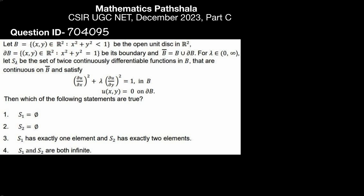Let B equal to {(x,y) ∈ ℝ² such that x² + y² < 1} be the open unit disk in ℝ², and ∂B equal to {(x,y) ∈ ℝ² such that x² + y² = 1} be its boundary, and B̄ = B ∪ ∂B. For λ belonging to the open interval (0, ∞), let S(λ) be the set of twice continuously differentiable functions in B that are continuous on B̄ and satisfy the given PDE in B, with u(x,y) = 0 on ∂B.